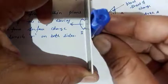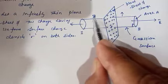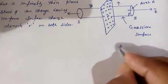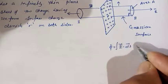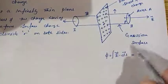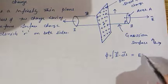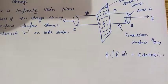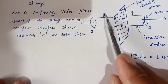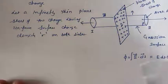The electric field through the curved part is parallel to the plane sheet of charge. Therefore, the electric flux due to part three will be zero. Why? Because electric flux is E dot dS. Since the electric field is parallel to the plane sheet and the area vector is perpendicular to it, the angle is 90 degrees, so E·dS·cos90° = 0. We will only have electric flux due to part one and part two.